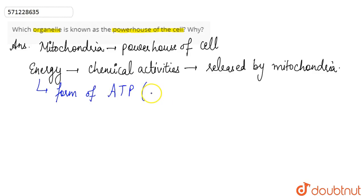The full form of ATP is adenosine triphosphate. ATP is known as the energy currency of the cell.